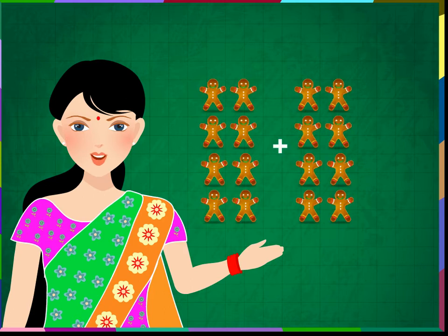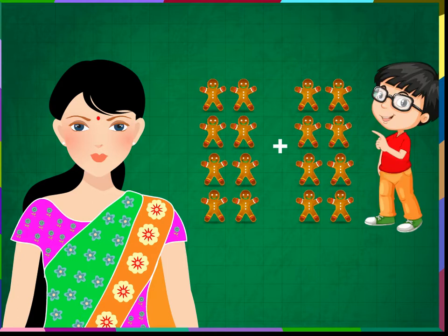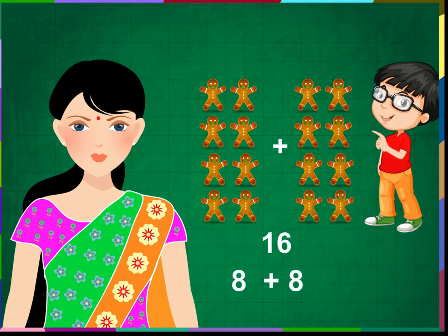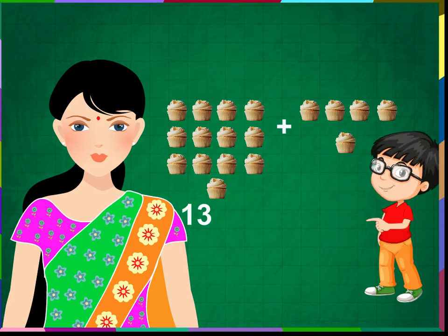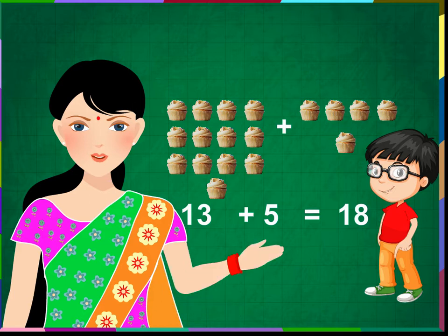Can you add these objects and give the sum? Yes, we can. 8 and 8 make 16. We can write it as 8 plus 8 is equal to 16. 13 and 5 make 18. Very good, students.